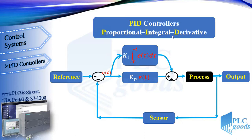First let's explain the PI controller. Suppose the reference level is 110 and the current level is 90 — at the start time the error is 20. The elapsed time is zero, so the integral output will be zero, but the proportional term will send a voltage to open the filling valve to increase the liquid level. Suppose the error then becomes 10 — now both proportional and integral terms send a voltage to the filling valve.